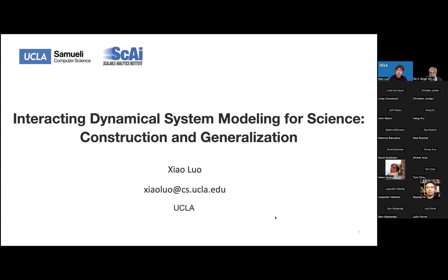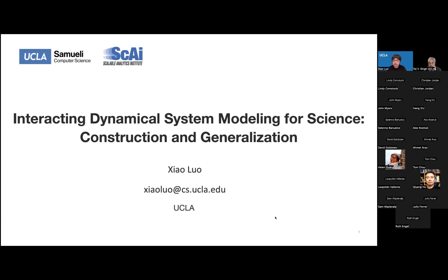Let me introduce you. Dr. Liu is a postdoctoral researcher at the UCLA Department of Computer Science. Previously, he received a B.S. degree in Mathematics from Nanjing University, China in 2017, and a Ph.D. in the School of Mathematical Sciences from Peking University, Beijing in 2022. His research interest includes machine learning on graphs, dynamical systems, statistical models, and AI for science.